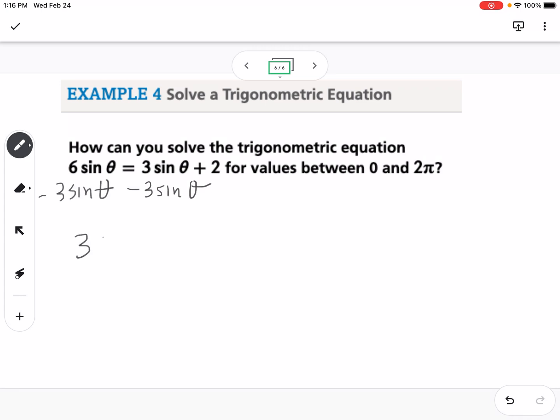So that gives us 3 sine of theta equals 2. Then I'm going to divide by 3. So that means that sine of theta is 2 thirds. So if I want to find theta, theta would be the inverse sine of 2 thirds.